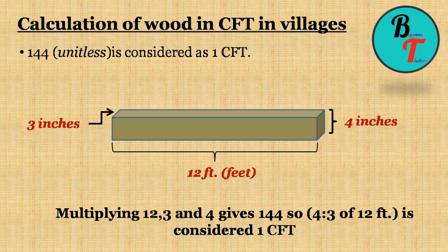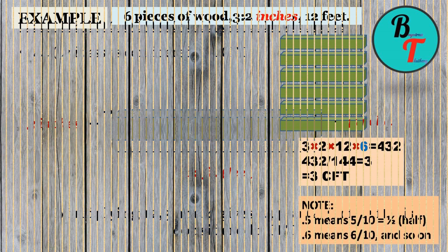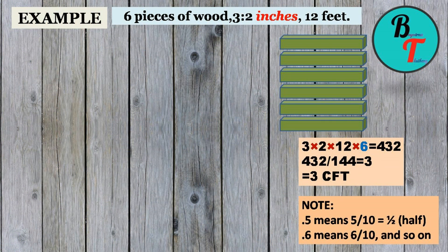Thus by using these two ways we arrive at the conclusion that a piece of wood of length 12 feet and 4 is to 3 of breadth and height is 1 CFT. Let us consider an example.